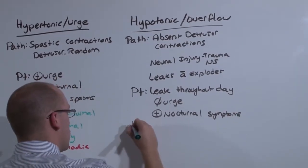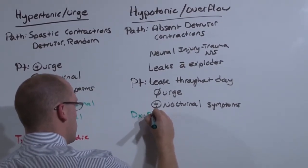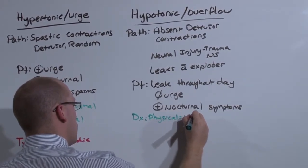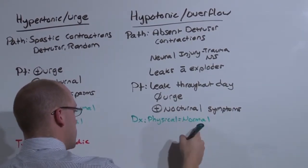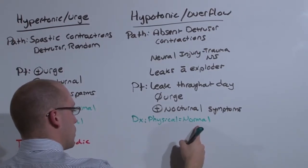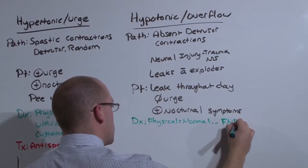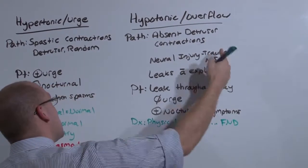The diagnosis on physical exam will be normal. If you're really good, you can feel the distended bladder, but you probably won't be able to. But what you could find is another focal neurologic deficit indicative of the spinal lesion leading to this problem.